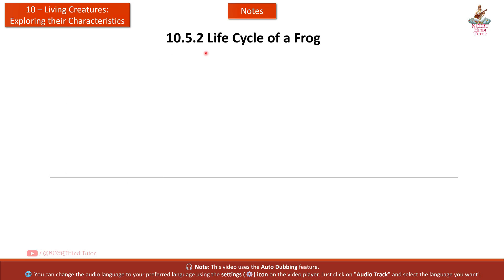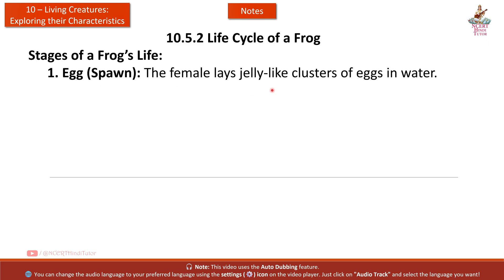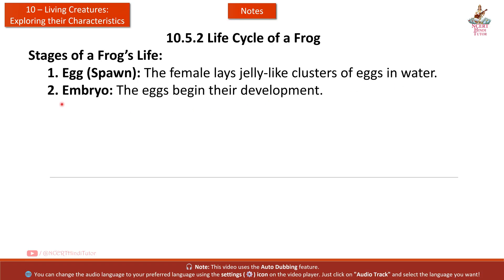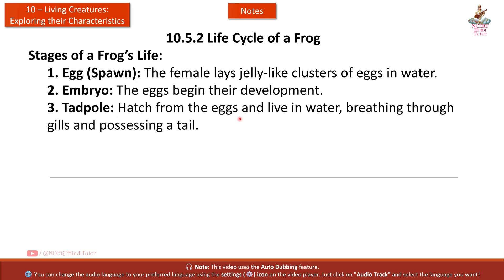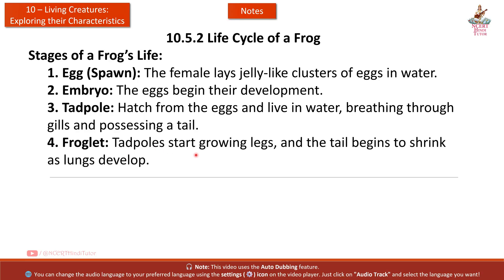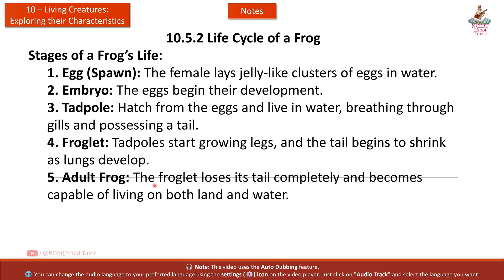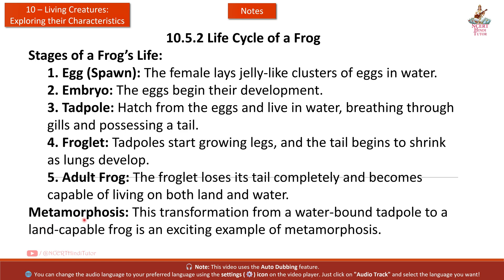Section 10.5.2: Life Cycle of a Frog. Stages: First, egg spawn — the female lays jelly-like clusters of eggs in water. Second, embryo — the eggs begin their development. Third, tadpole — hatched from eggs and living in water, breathing through gills and possessing a tail. Fourth, froglet — tadpoles start growing legs and the tail begins to shrink as lungs develop. Fifth, adult frog — the froglet loses its tail completely and becomes capable of living on both land and water. This transformation is an exciting example of metamorphosis.